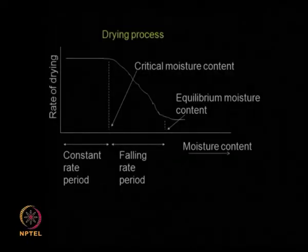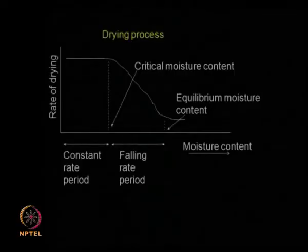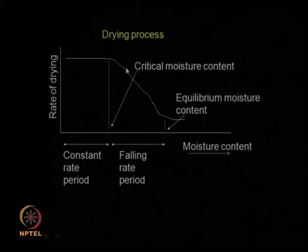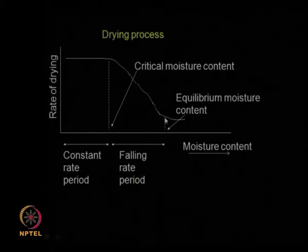Once water starts drying from the surface, the surface has only a small amount of water; more water is present in the interstices or pores. Water needs to diffuse out of these pores, come to the surface, and then get evaporated. During this time, the rate of drying starts falling — that is called the falling rate period. As time progresses, the water inside has to diffuse out and then evaporate, so it becomes slower and slower.